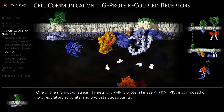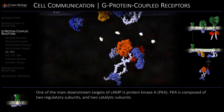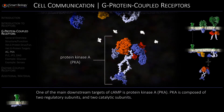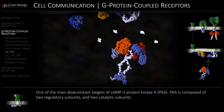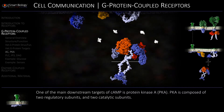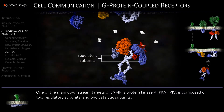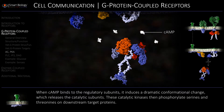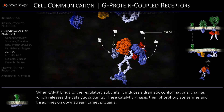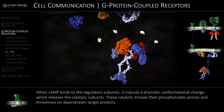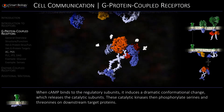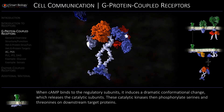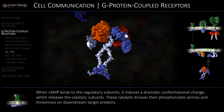One of the main downstream targets of cyclic AMP is protein kinase A, or PKA. PKA is composed of two regulatory subunits and two catalytic subunits. Once cyclic AMP binds to the regulatory subunits, it induces a dramatic conformational change.